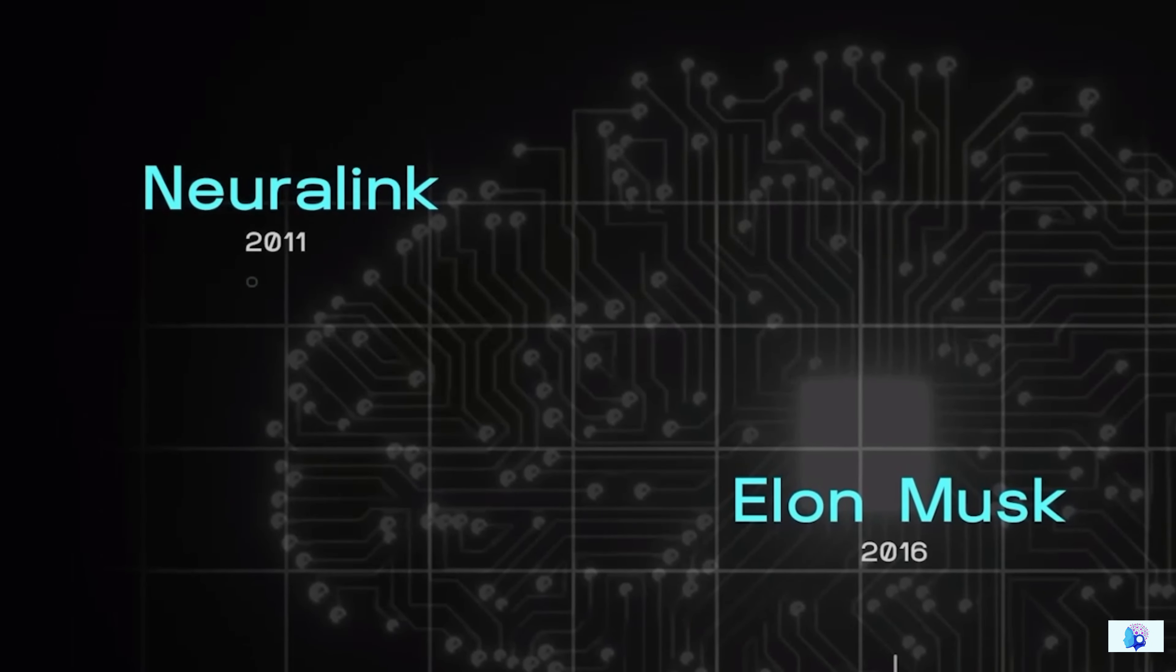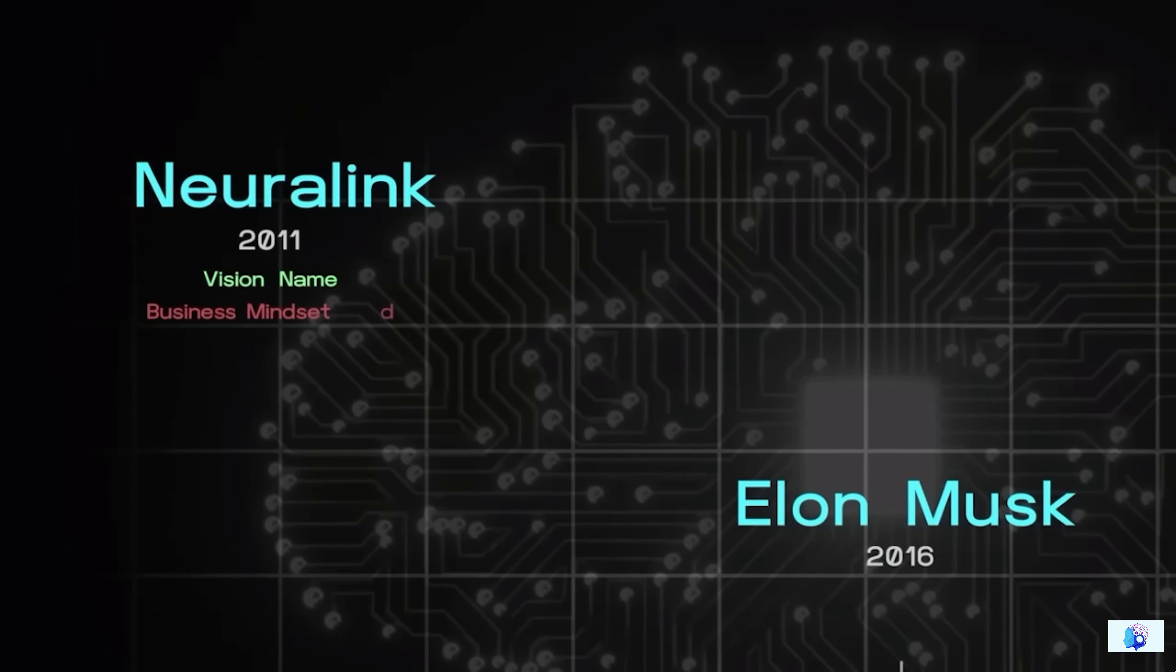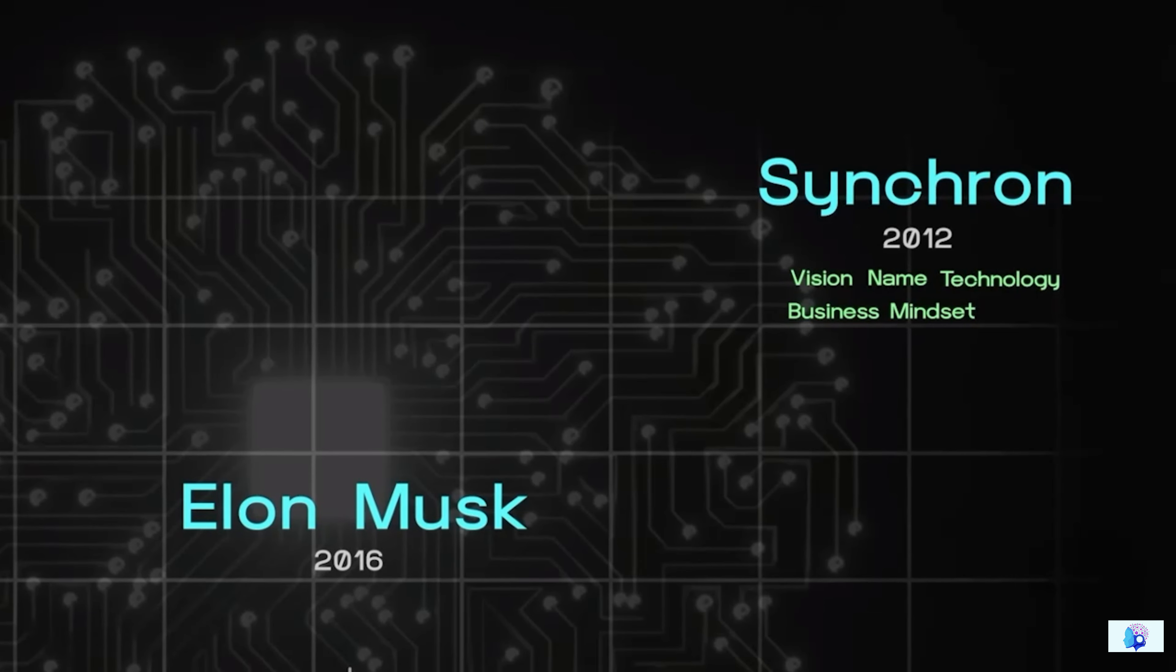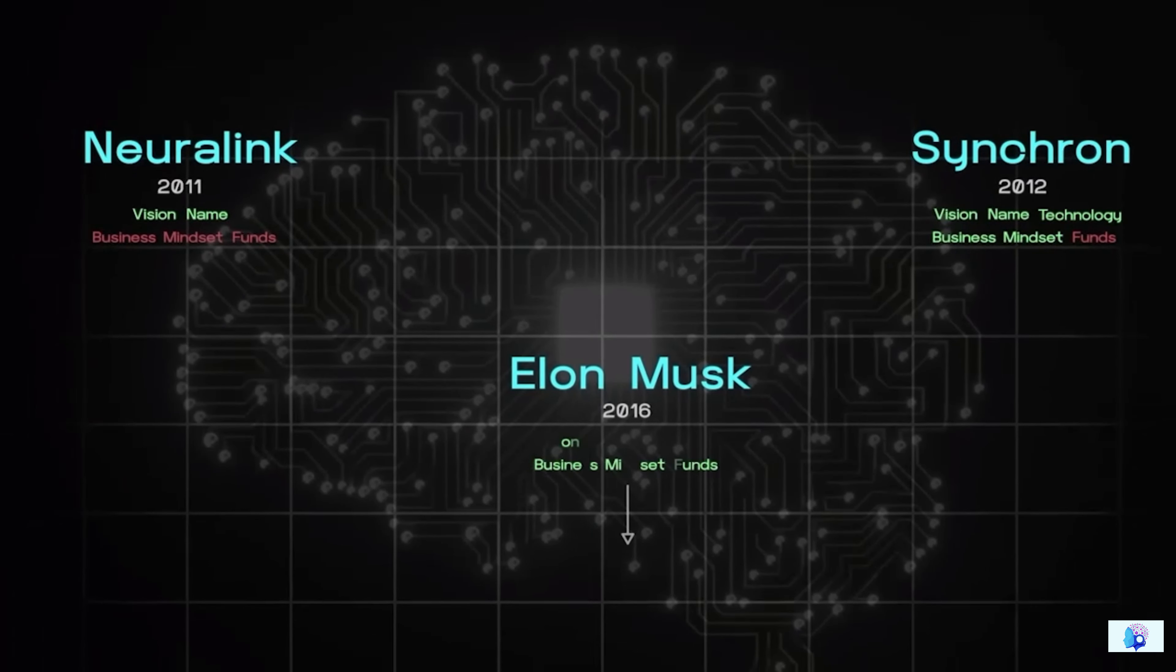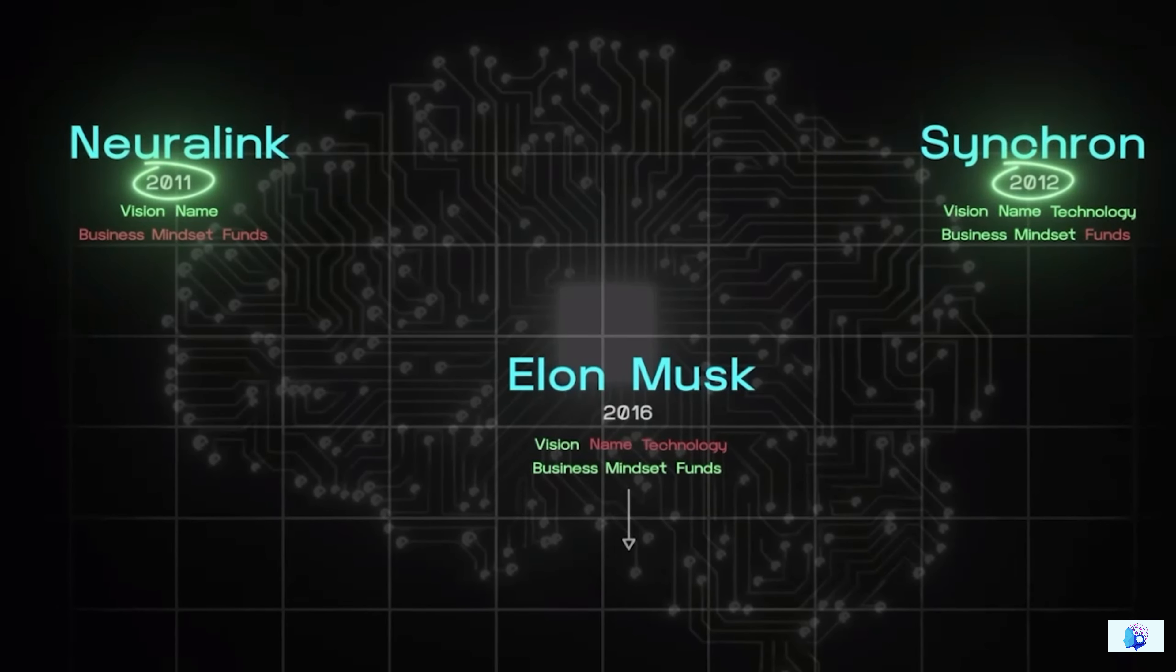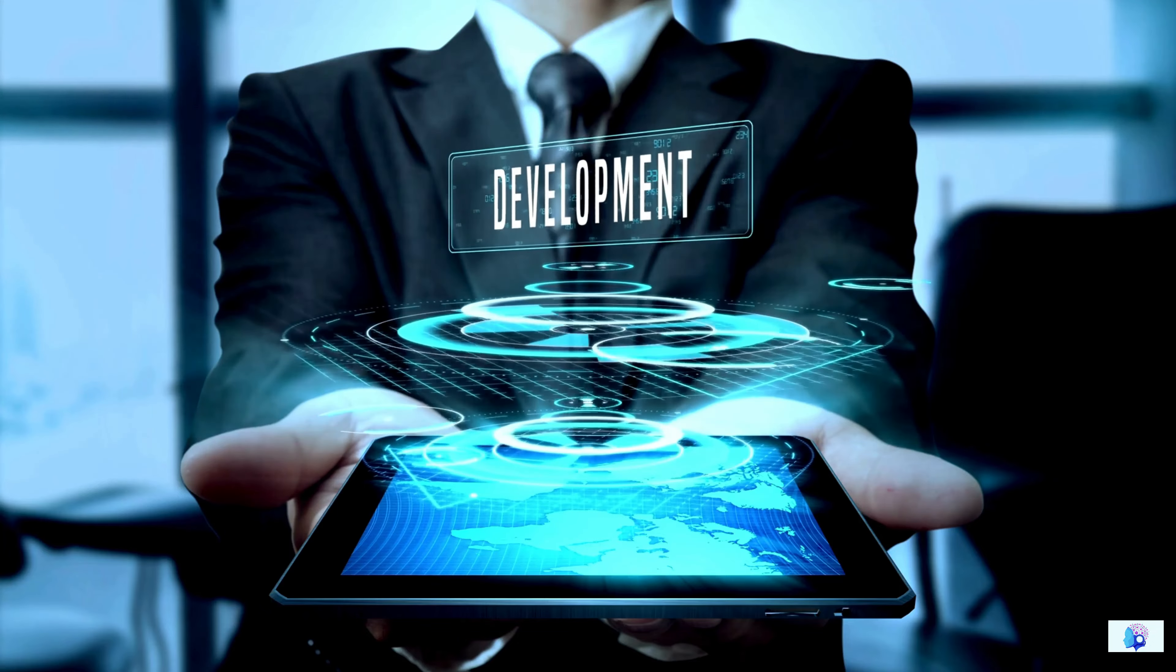The first competitor had a vision for creating BCI technology and even had a catchy name for their startup. However, they lacked a business mindset and funding. The second competitor had a name, vision, technology, and even a business mindset, but was lacking in funding. As for Elon Musk, he had the vision, business mindset, and funding, but lacks a name in technology for his new startup. Furthermore, Elon Musk faced a significant disadvantage by entering the market four years later than the other competitors.